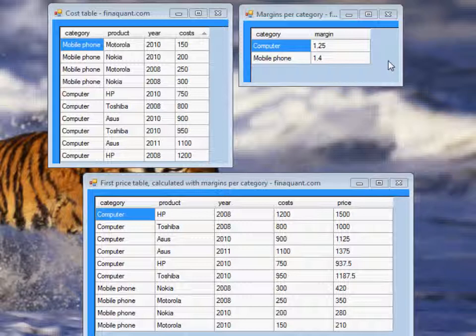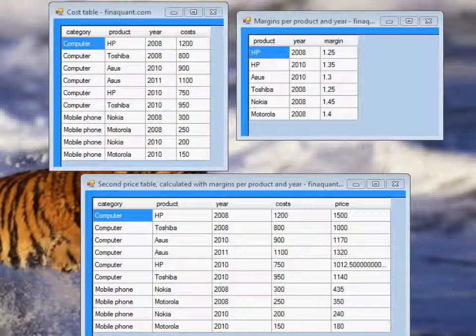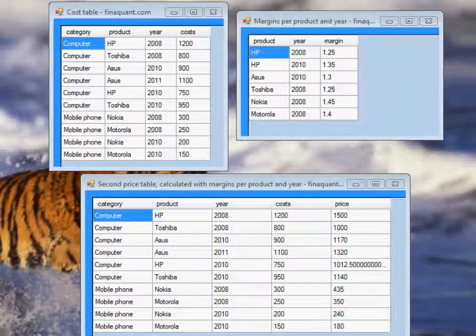When you execute the table multiplication function, you get this price table. As expected, margins of 25% for computers and 40% for mobile phones. In the second example, margins are specified in more detail, this time per product and year.